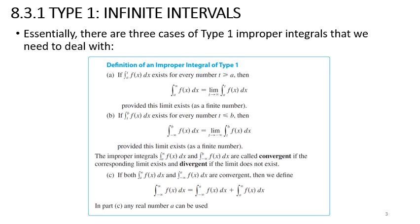In the case of infinite intervals, there are three cases for Type 1 improper integrals. Case a: if you integrate a function f(x) from a to t, where t is always greater than a, you write it as the limit as t approaches infinity of the integral from a to t of f(x) dx, provided this limit exists as a finite number.